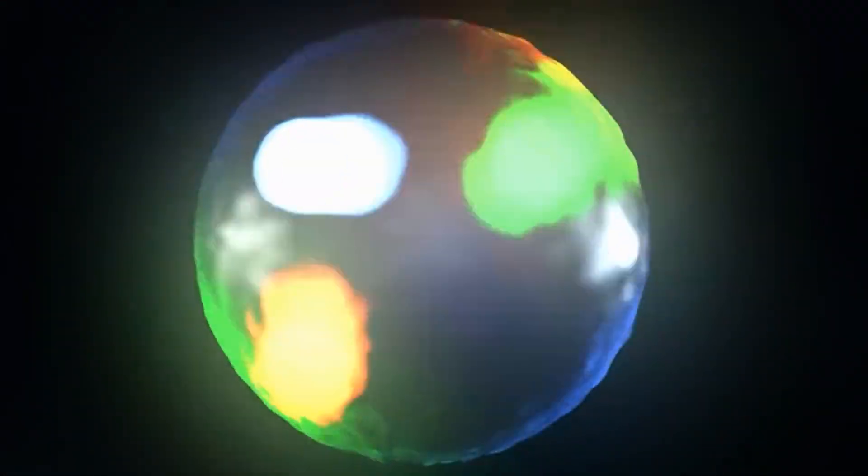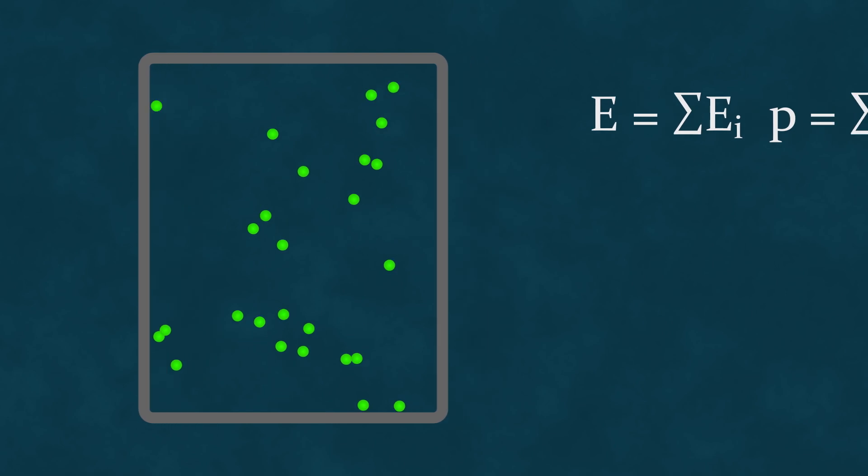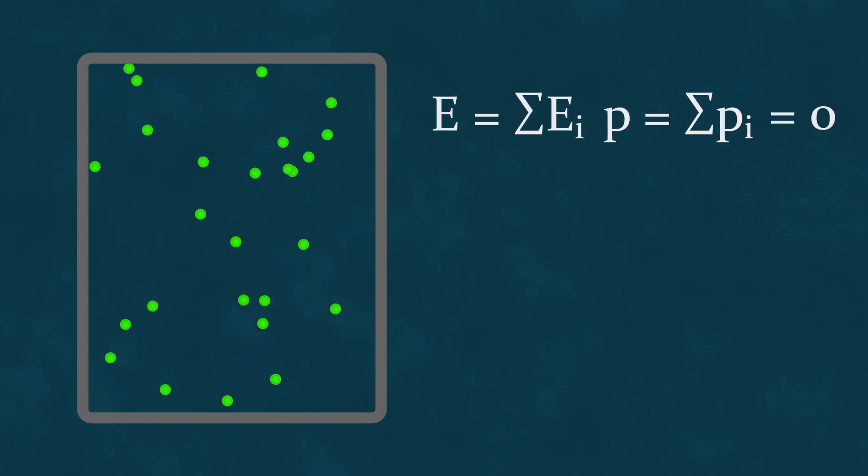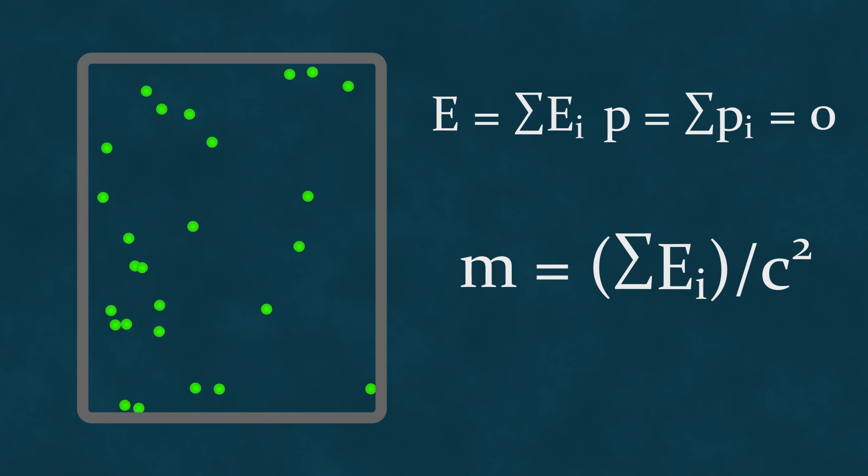For instance, objects with internal structure may also have internal energy due to the motion and interaction of their constituent elements. Consider a volume of gas composed of molecules, enclosed in a container whose mass we will disregard for now. The rest energy of this gas equals the sum of the rest energies of its constituent molecules, and the total momentum equals the sum of the momenta of these molecules. If the container with gas is stationary as a whole, that is, the velocity of its center of mass is zero, then the sum of the momenta of the molecules will also be zero. Thus, we can apply the formula E equals MC squared to relate the mass of the gas to its energy.